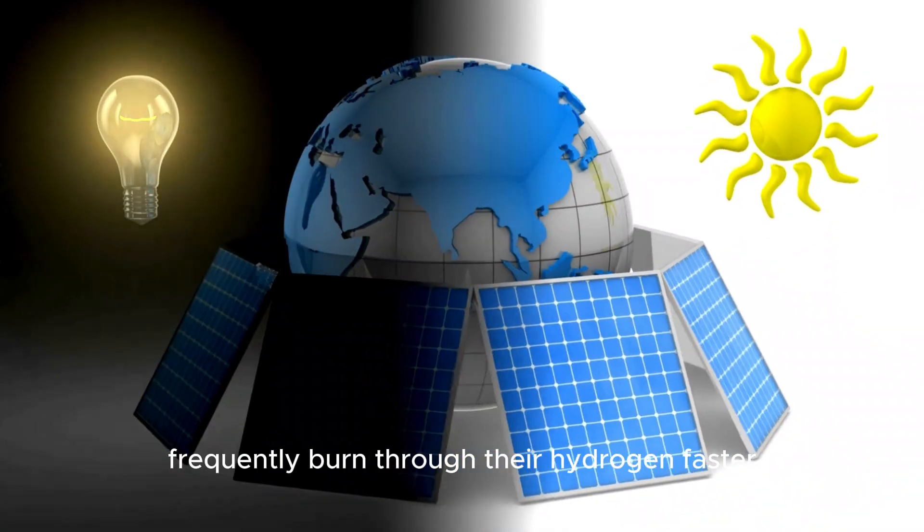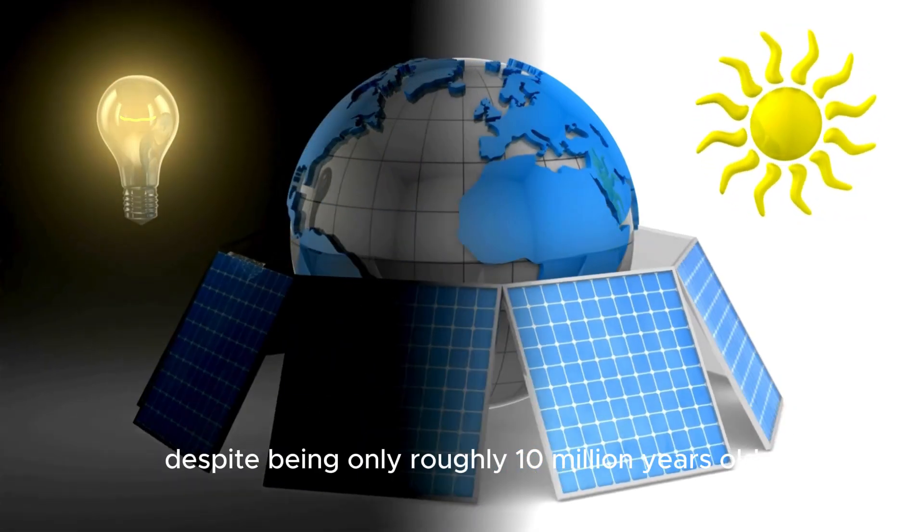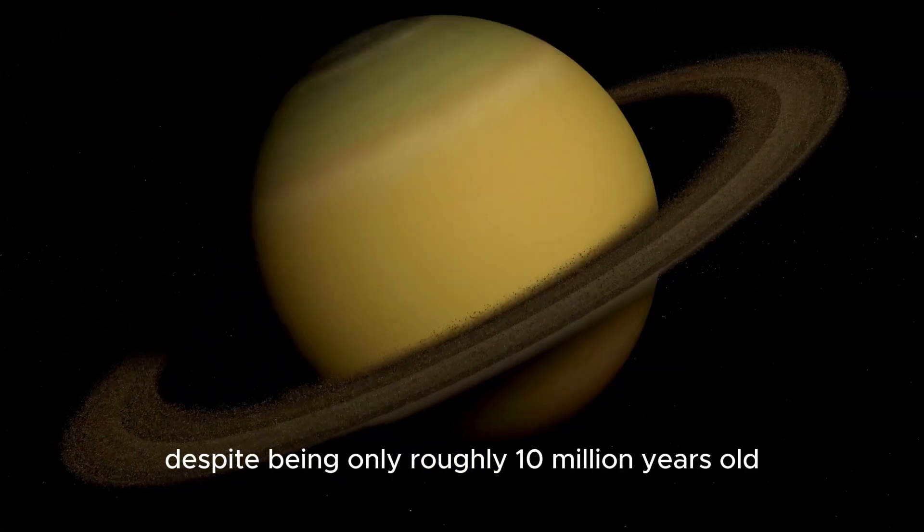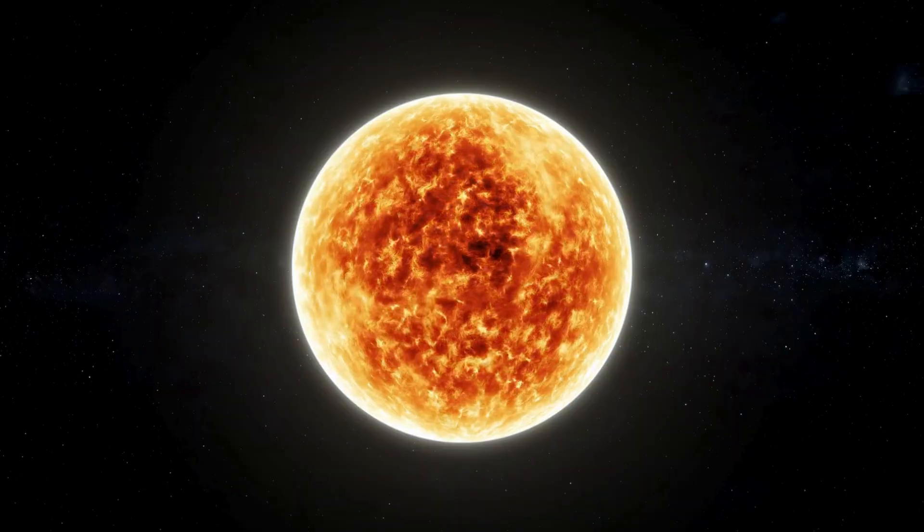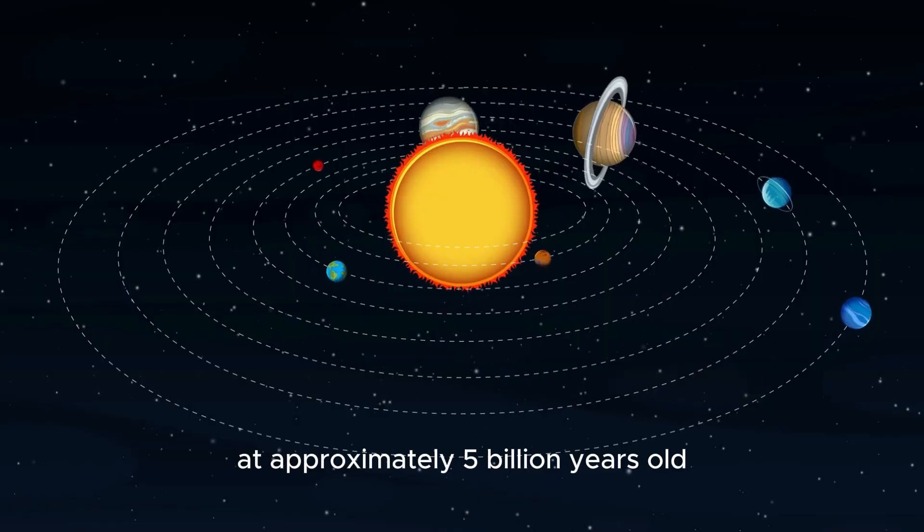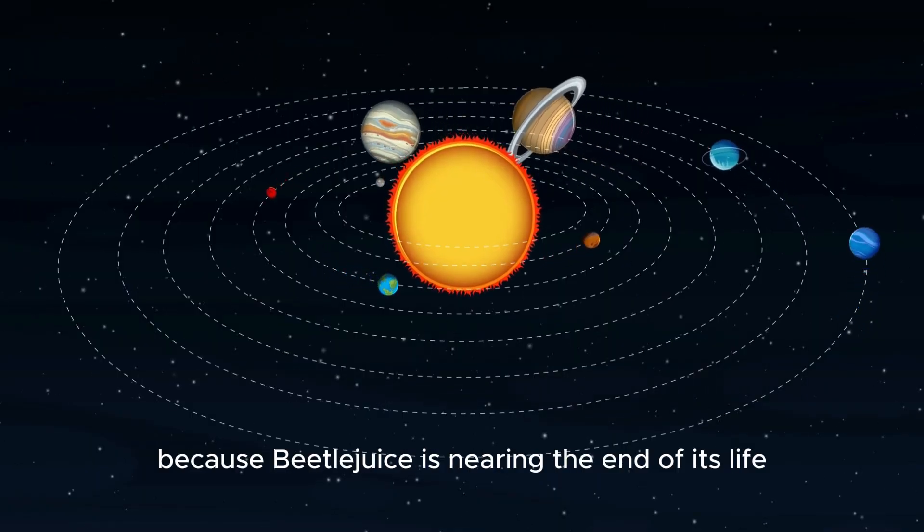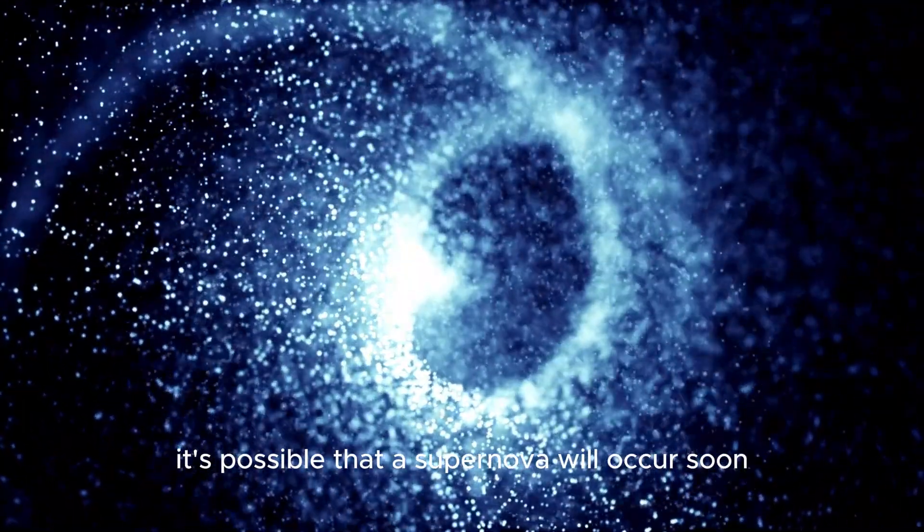Larger stars frequently burn through their hydrogen faster and die off sooner. Despite being only roughly 10 million years old, Betelgeuse is certainly nearing the end of its lifespan. Our sun, on the other hand, is still in its prime at approximately 5 billion years old. Furthermore, because Betelgeuse is nearing the end of its life, it's possible that a supernova will occur soon.